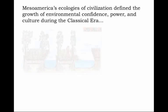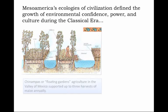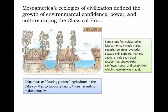Mesoamerica's ecologies of civilization defined the growth of environmental confidence, power, and culture during the classic era. And as always, it relied on the engineering feats of agriculture and food production. The famous Chinampas — or floating gardens of central Mexico — in the high elevation valley of central Mexico, were floating gardens built on lake tops that supported up to three harvests of maize annually. The alluvial, nutrient-rich soils of the lake bottom would be dredged up onto floating platforms where great harvests of maize were cultivated up to three times a year to feed the growing urban population. Not only a remarkable feat of food production, but a remarkable feat of basic human engineering as well — the humanizing of landscapes.